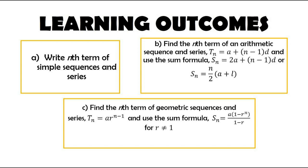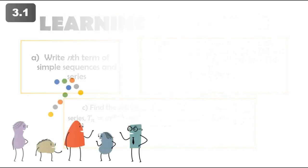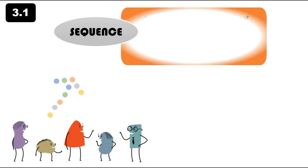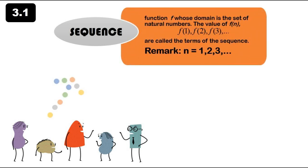We're going to start with sequence. Sequence is basically defined as a function whose domain is the set of natural numbers. The values of f(n), f(1), f(2), f(3), are called the terms of the sequence.